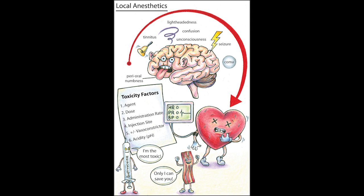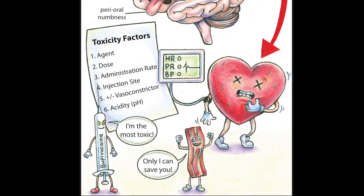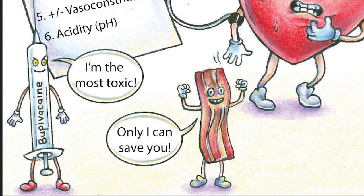Local anesthetic toxicity. Local anesthetics are used routinely in emergency medicine and in primary care for minor procedures and local anesthesia. They can also be used for regional nerve blocks. Drugs in this class include procaine, chloroprocaine, tetracaine, lidocaine, mepivacaine, and bupivacaine, with bupivacaine being the most toxic.